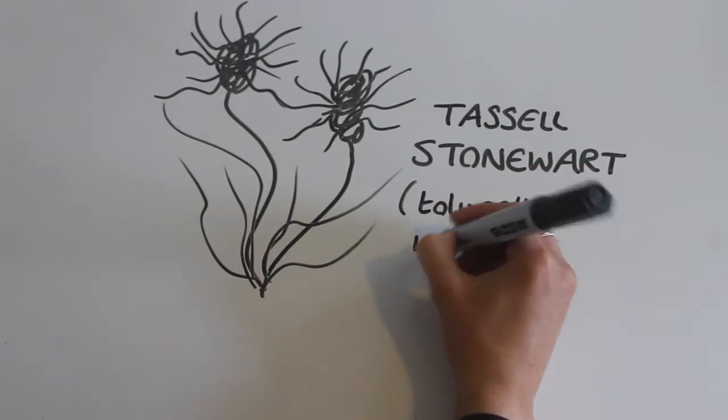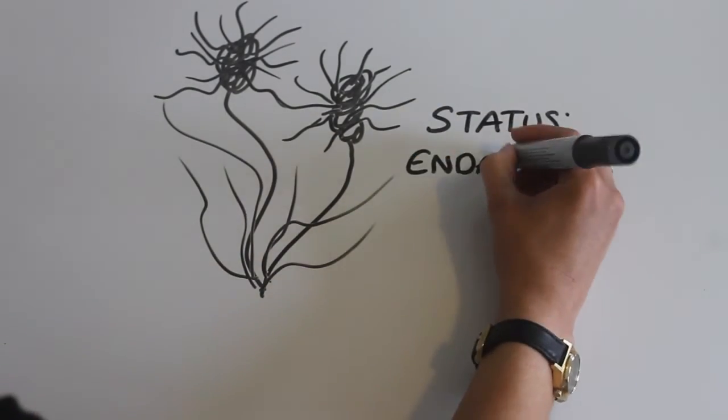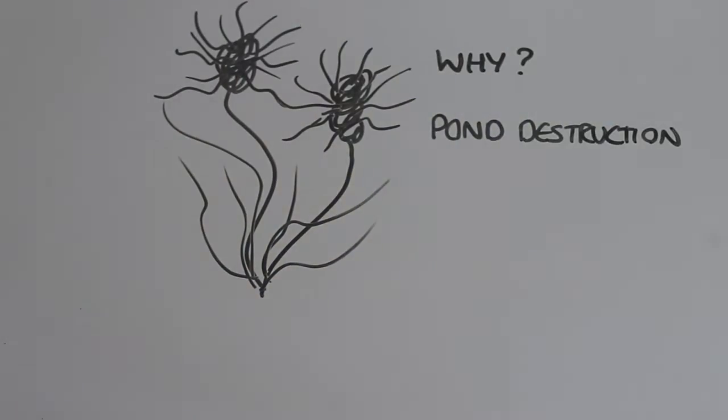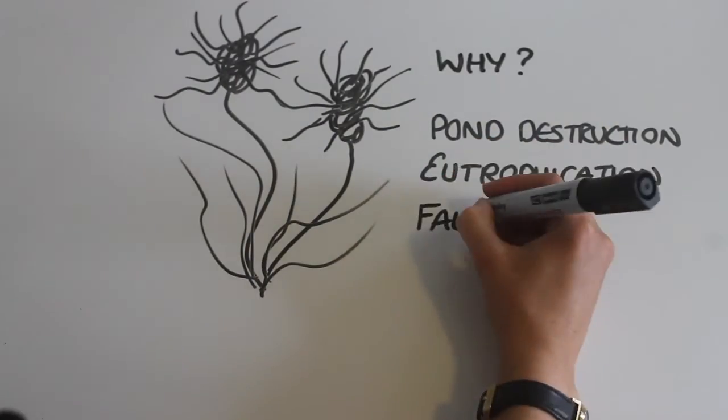Another inhabitant of ponds is the tassel stonewort. It is endangered in the UK. Its threats include poorer pond management and falling water table levels.